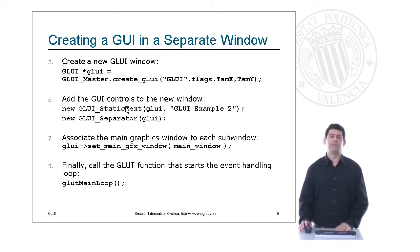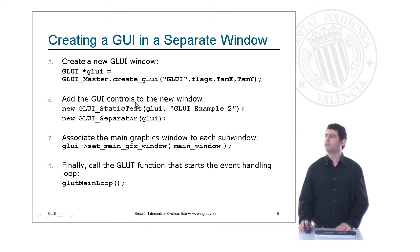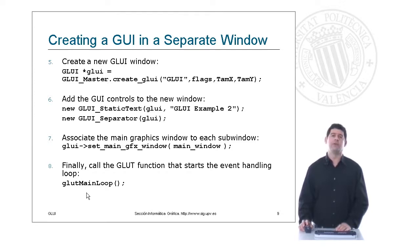There are a few other steps left. Next, we create a new GLUI window and insert or add the graphical user interface controls to this new window. For example, here we are adding a static text and a separator. We have to make sure that we associate the main graphics window with each of the sub-windows. Finally, don't forget to call the GLUT function that starts the event handling loop inside of the main program.